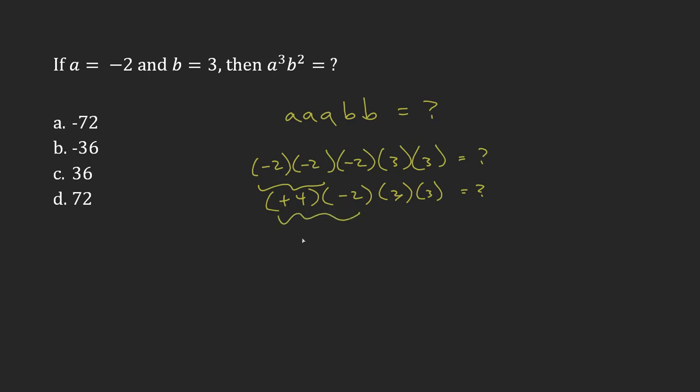Positive times negative gives me a negative. 4 times 2 is 8. So now I'm looking at negative 8 times 3 times 3.